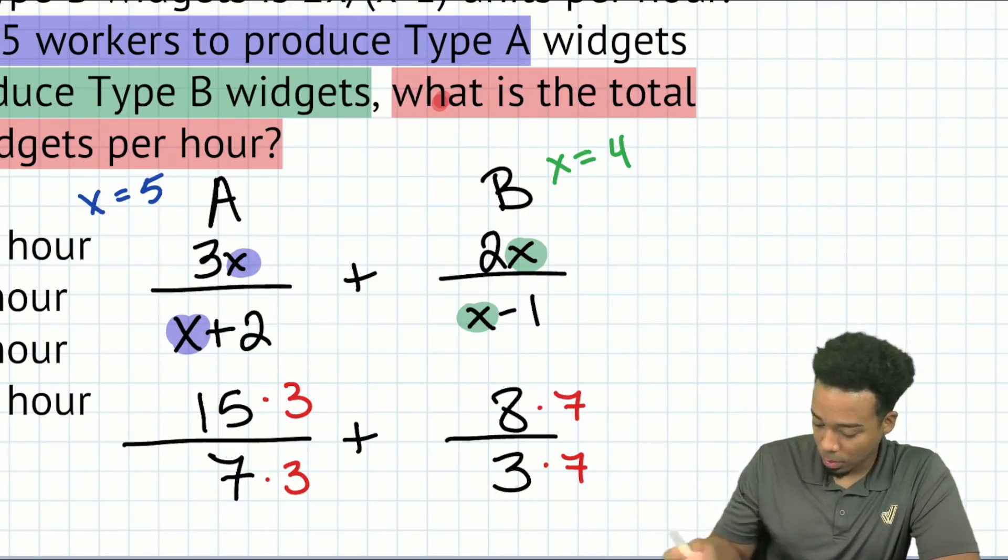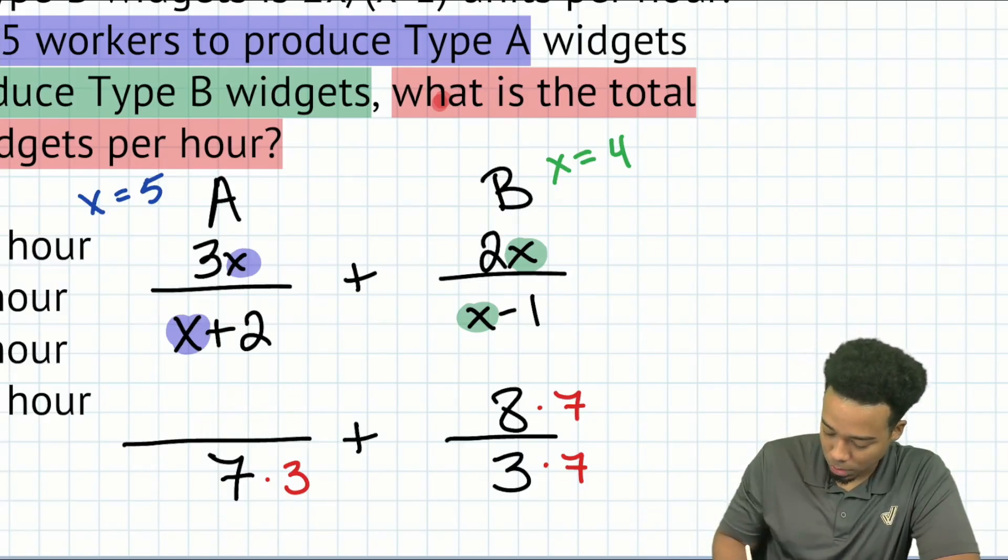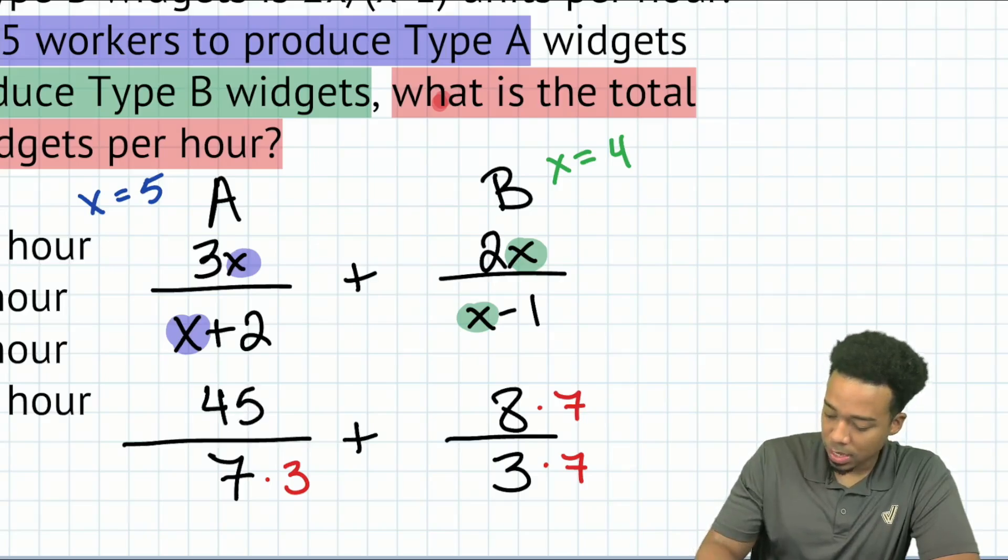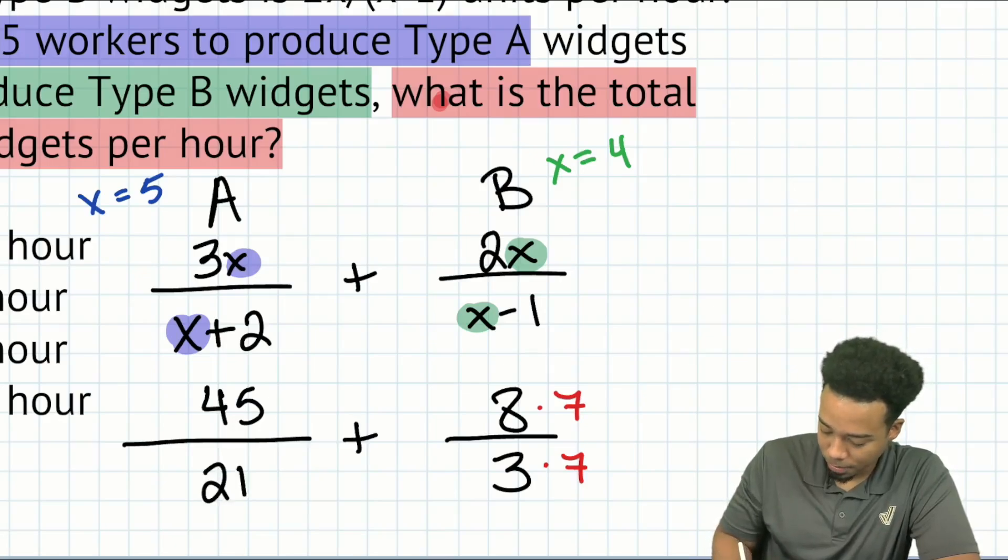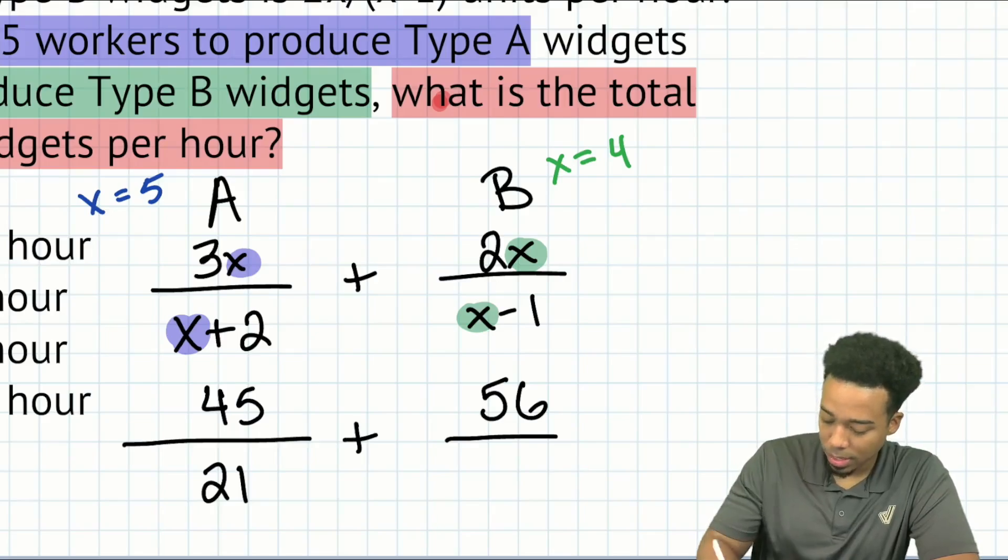Let's go ahead and do the same thing we did before and simplify. 15 times three is going to be 45. Seven times three, that's going to be 21, what we were trying to get for a denominator. And then we have eight times seven, that's going to be 56 right over here. And then we have three times seven, that's going to be 21.